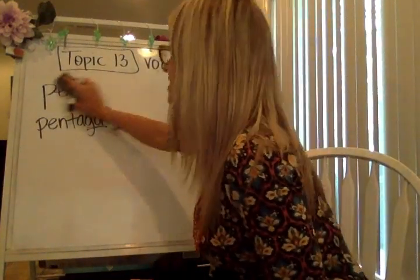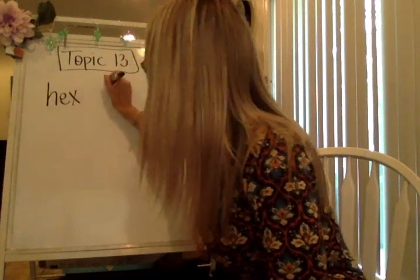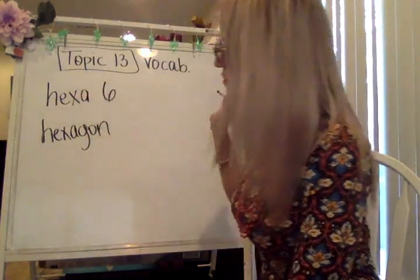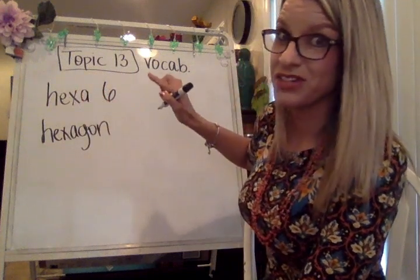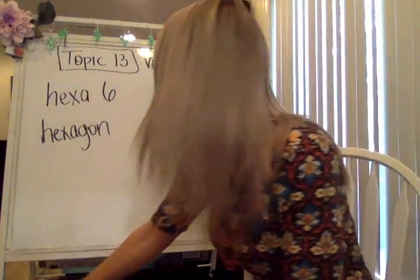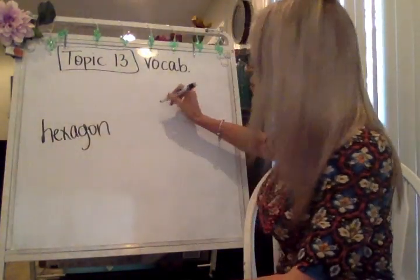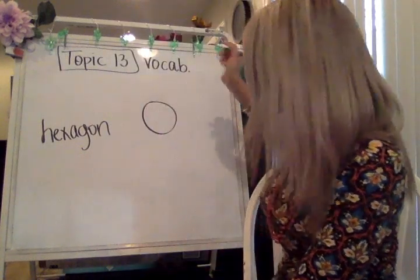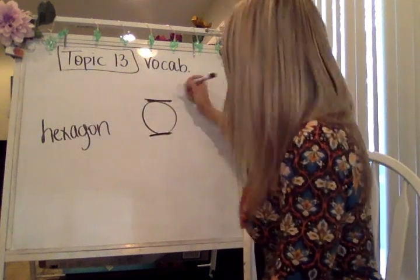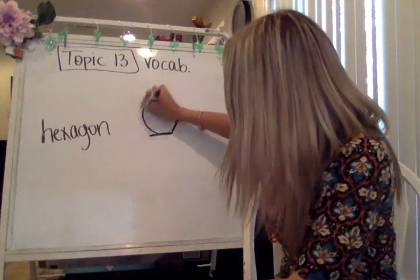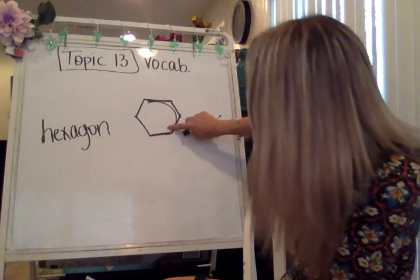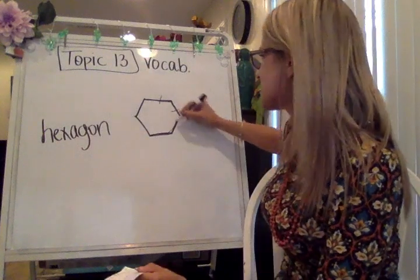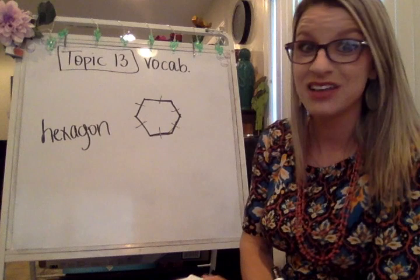The next word is hexagon. The prefix 'hexa' or 'hex' refers to six, so a hexagon has six sides. A cool way to draw a hexagon if you're really struggling is to draw a circle, draw a line at the top and a line at the bottom, and then do two sideways letter Vs on each side. If you erase the circle, you've got a six-sided figure — a hexagon with sides one, two, three, four, five, and six.